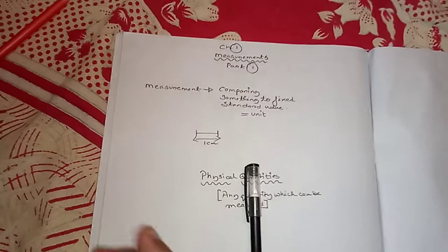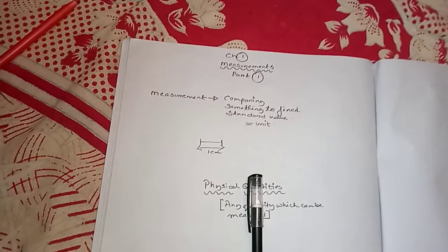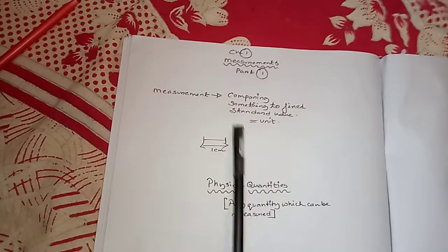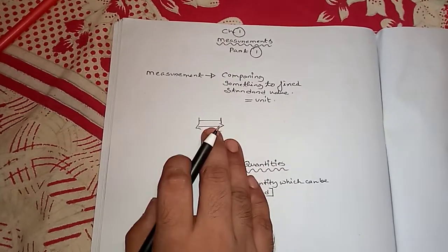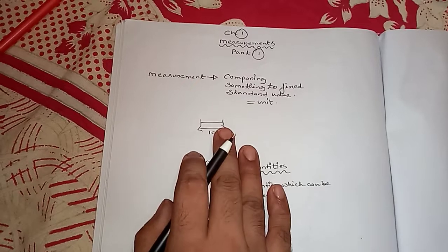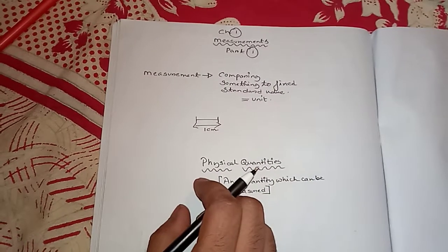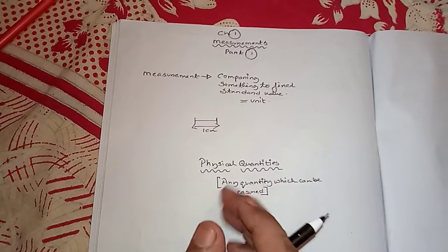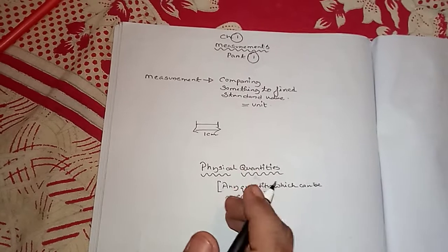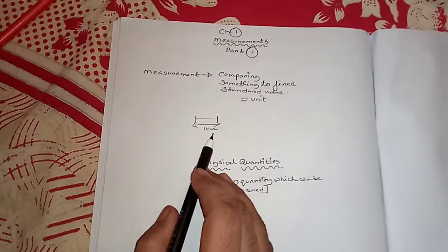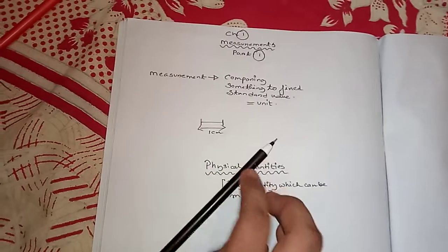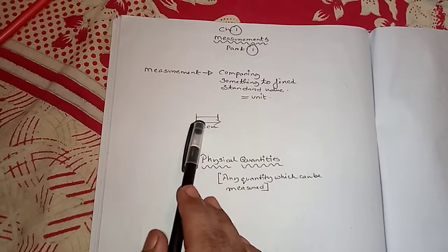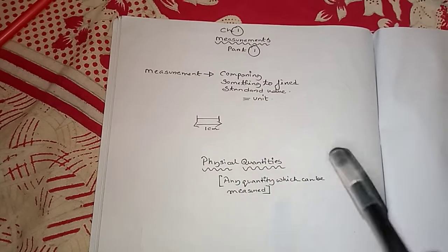What is measurement? Measurement means nothing but comparison — comparing something to a fixed standard value, which we call a unit. Now suppose you have a line, you draw this line and you want to measure the length of it. For this purpose you will obviously use a scale, because the scale has a fixed, accepted standard value. Suppose the unit of the scale is centimeter. After comparing this line with the scale, you get the value of the line as one centimeter.